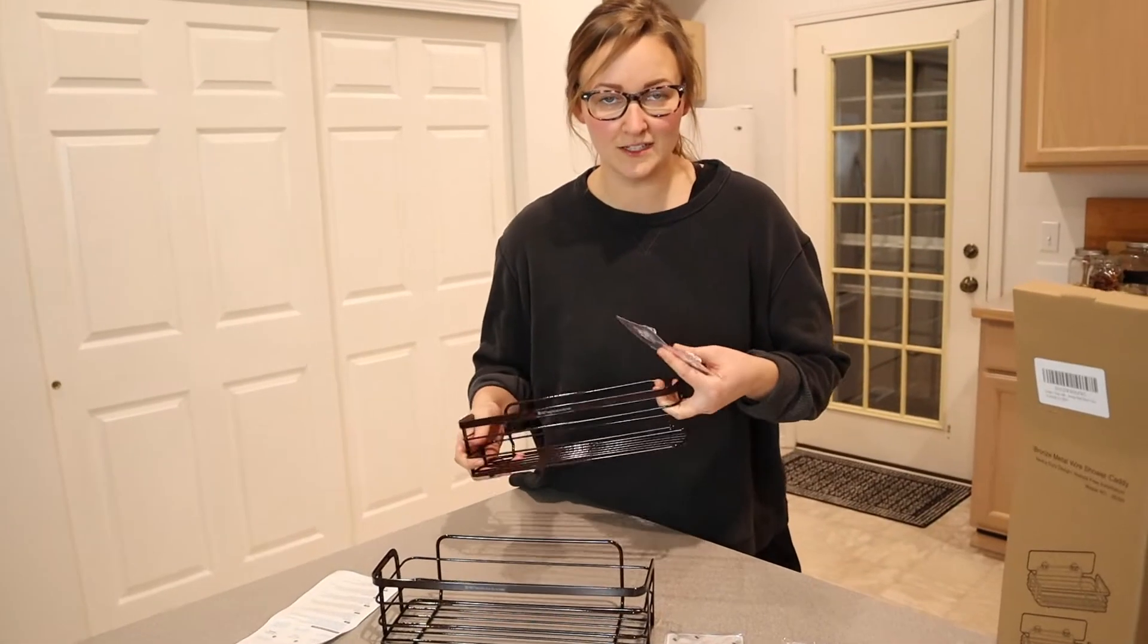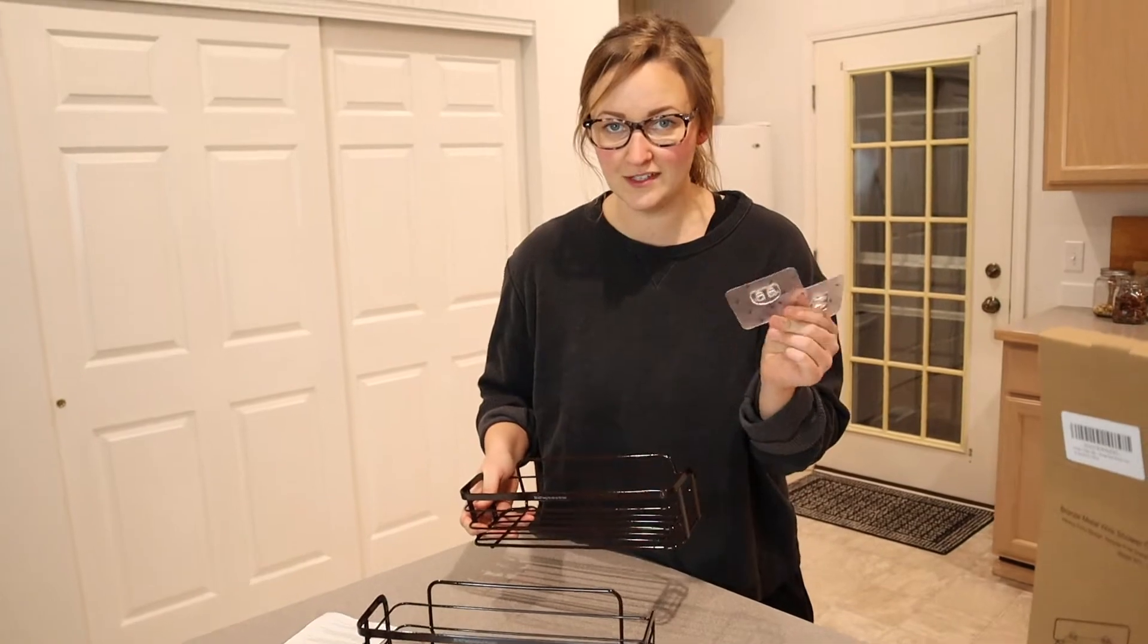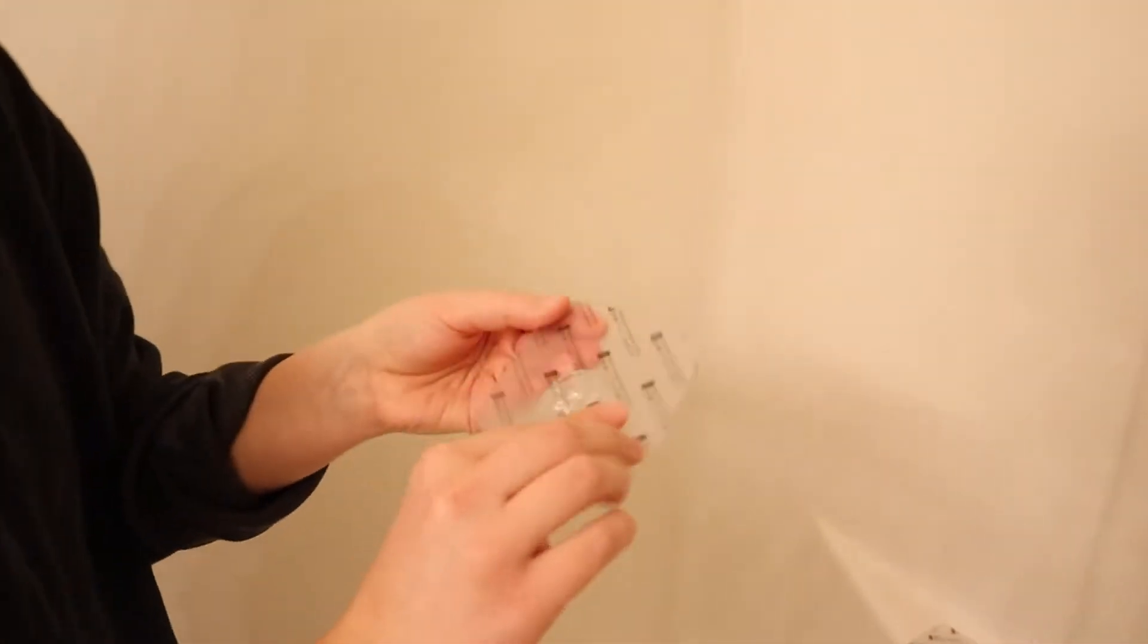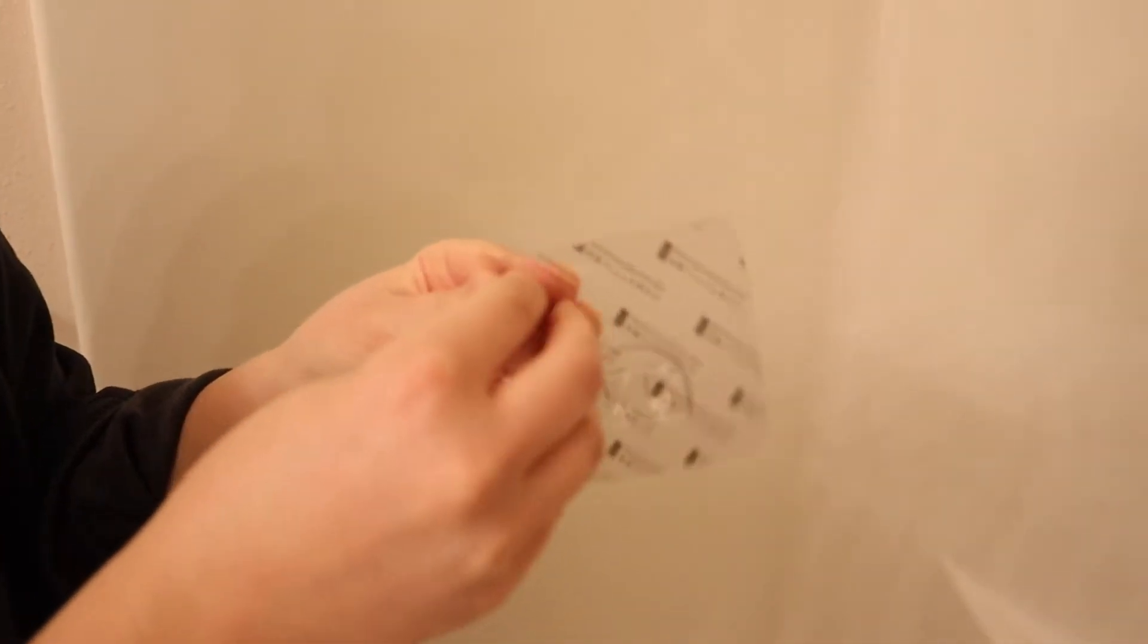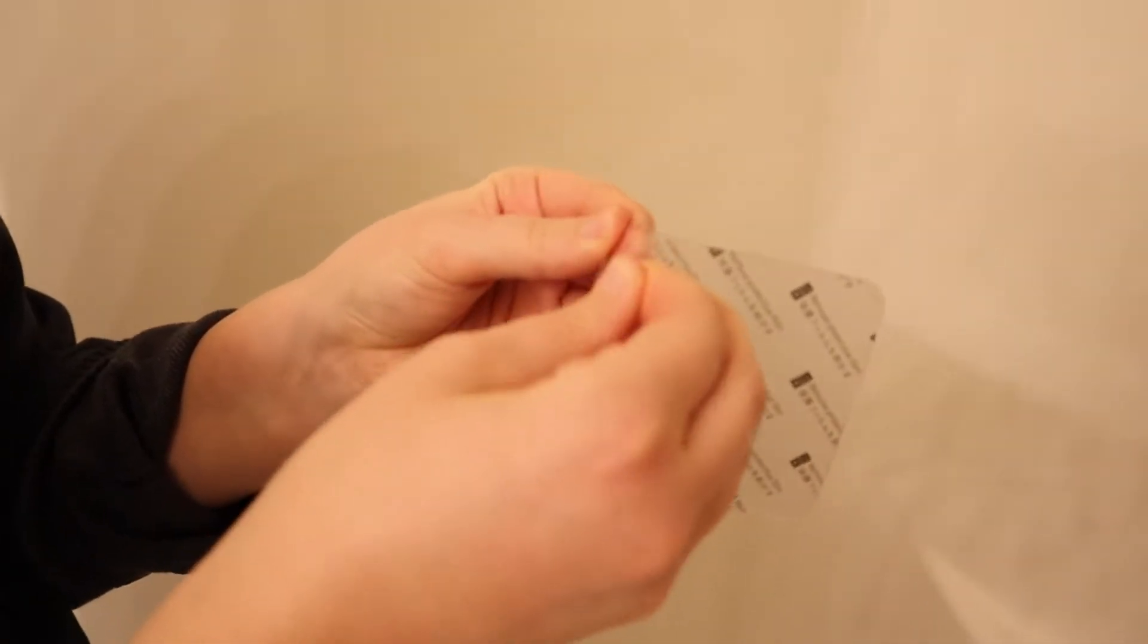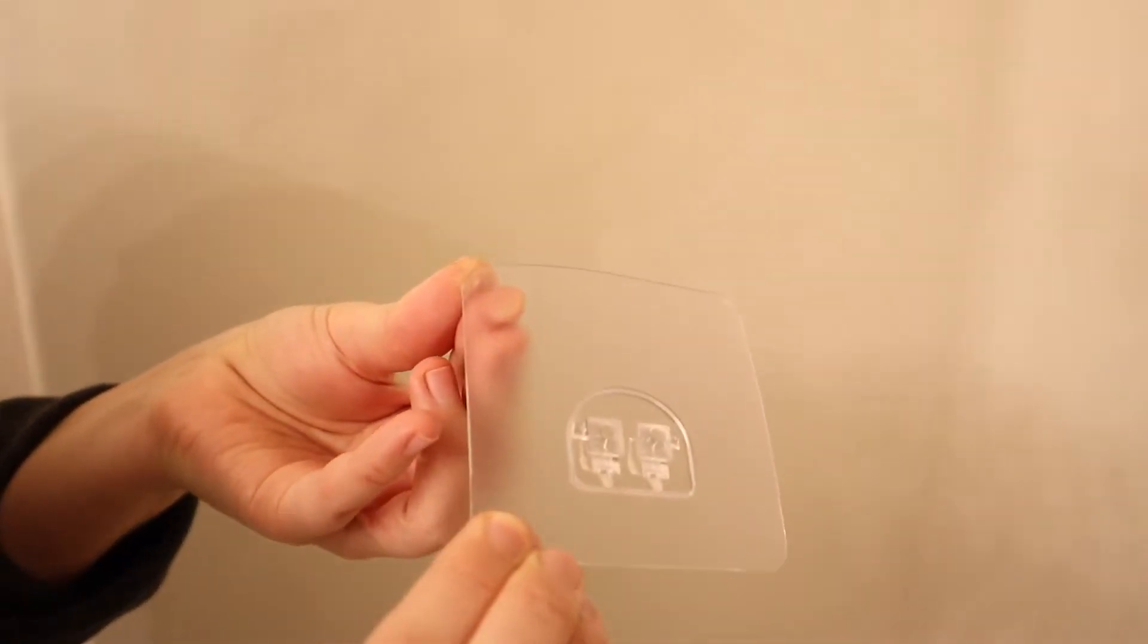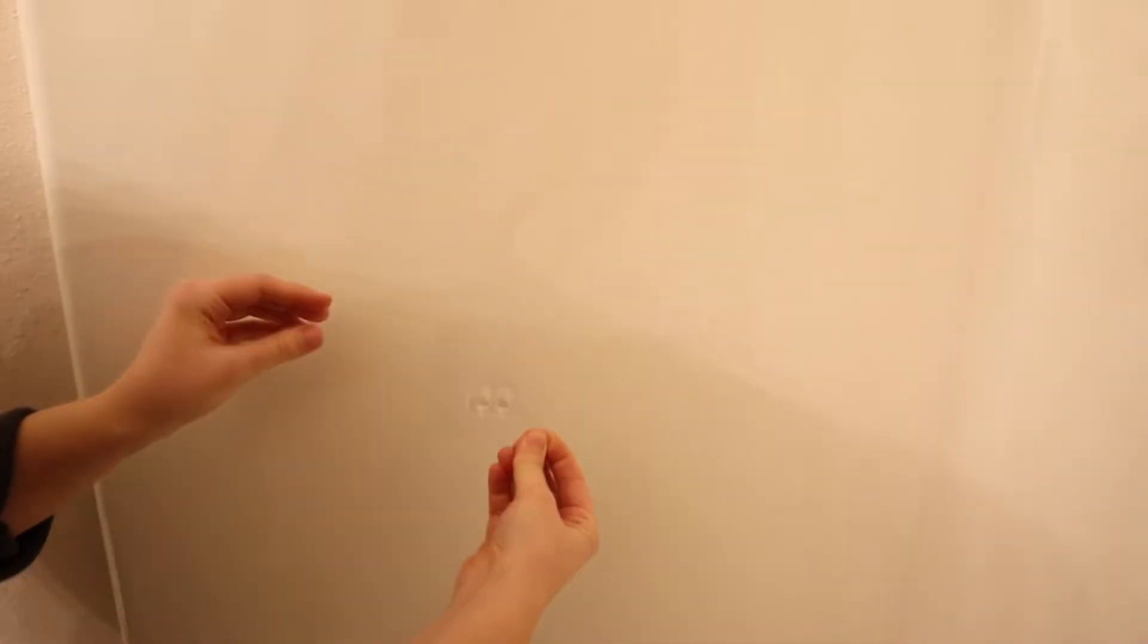All right. I'm going to go ahead and take these to the bathroom and prep the surface and hang these up. All right. So I'm going to start with these two adhesive squares and I'm just going to peel off the backing on one of them. As you can see, they are really sticky, which is nice.